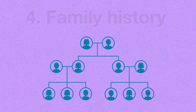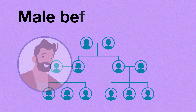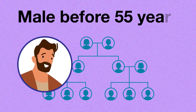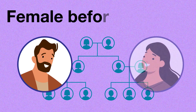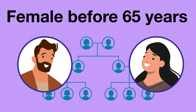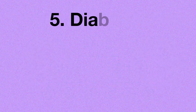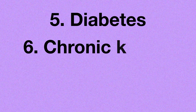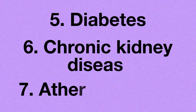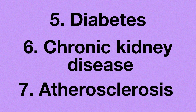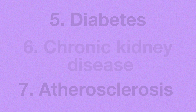Specifically, if you have a close male relative with CVD before age 55, or a close female relative with CVD before age 65. They will also record if you have diabetes, chronic kidney disease, or atherosclerosis. These conditions put you at higher risk for a heart attack or stroke.